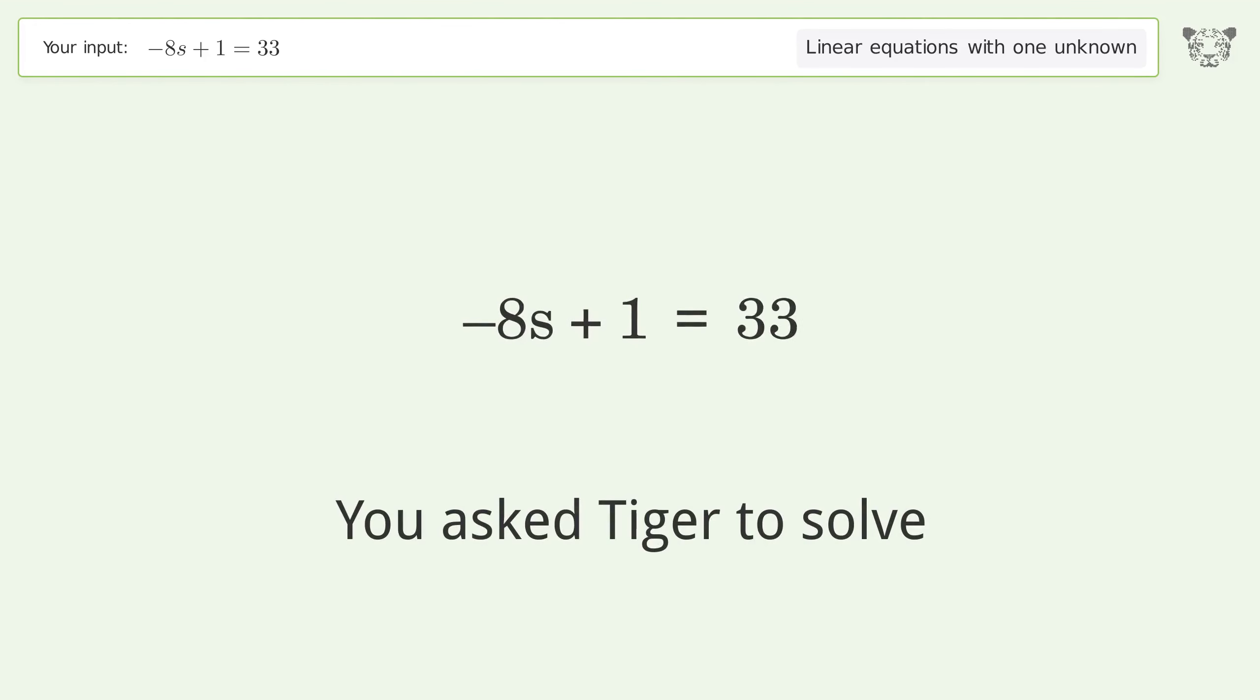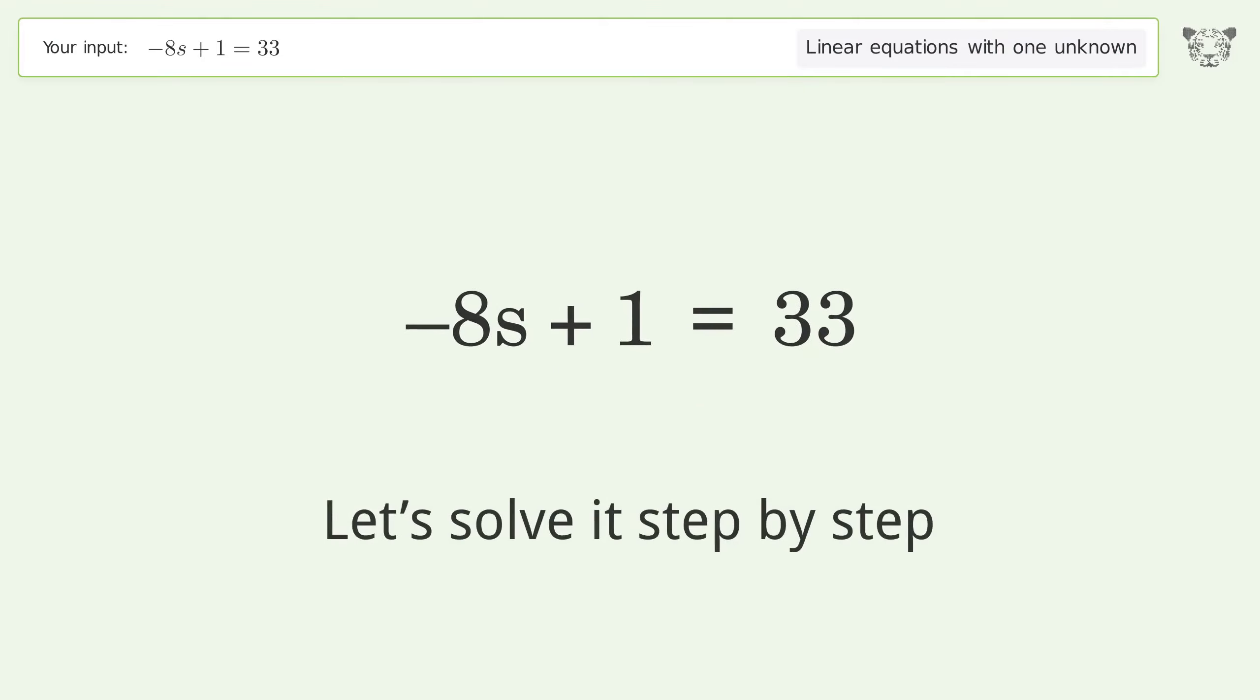You asked Tiger to solve. This deals with linear equations with one unknown. The final result is s equals negative 4. Let's solve it step by step.